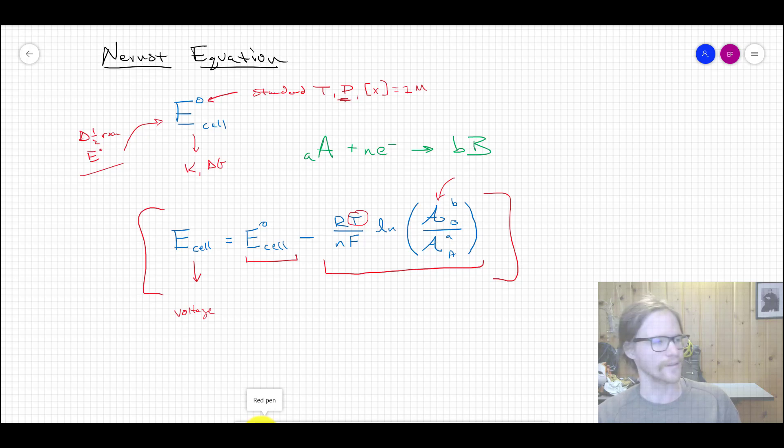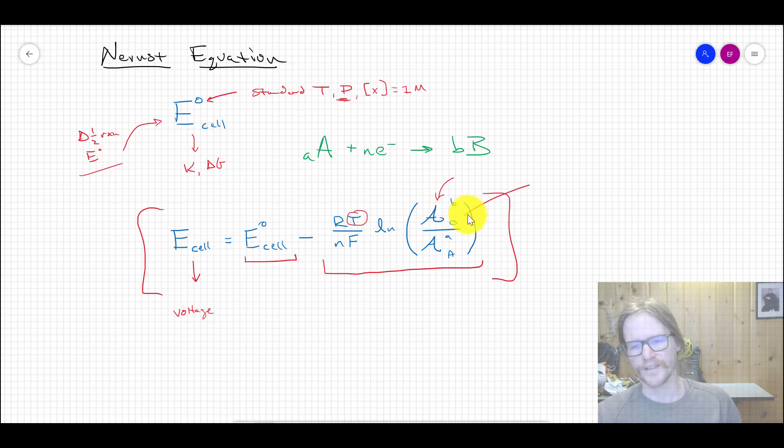The concentrations of these species when they're both one, or when the activities are both one which would be standard—so both to one molar—what happens to the equation? Well, log of one collapses and Ecell is equal to E°cell, which makes sense, right? That's standard conditions.